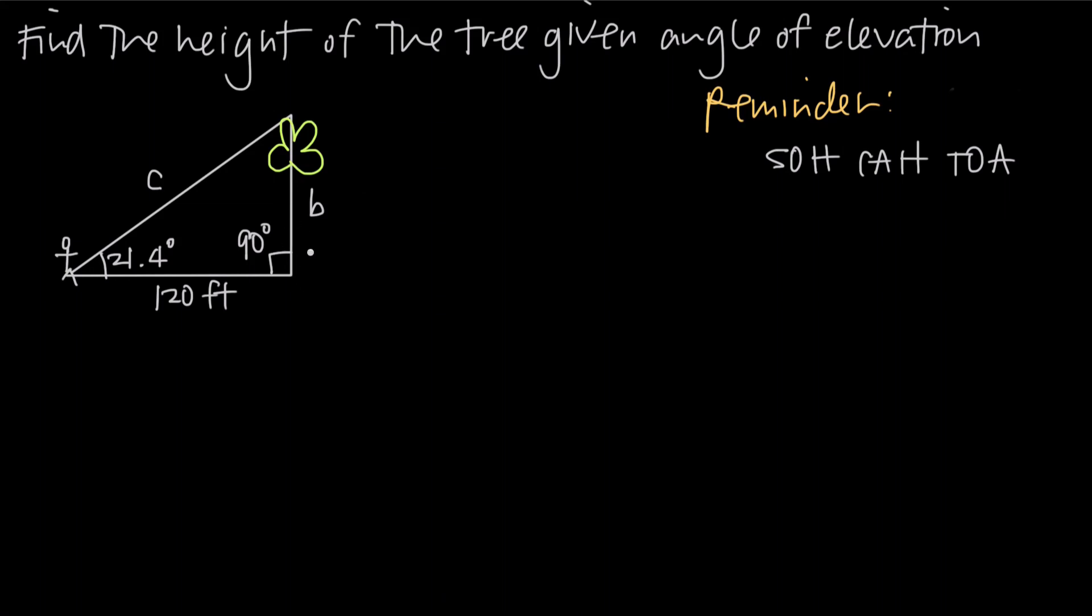We've been asked to use this information to find the height of the tree. The first thing we want to do is remember that the three interior angles of a triangle always sum to 180 degrees. Since we have two of the angles, we can find the third one. We'll take the total 180 degrees and subtract 90 degrees and 21.4 degrees. Our result is 68.6 degrees.